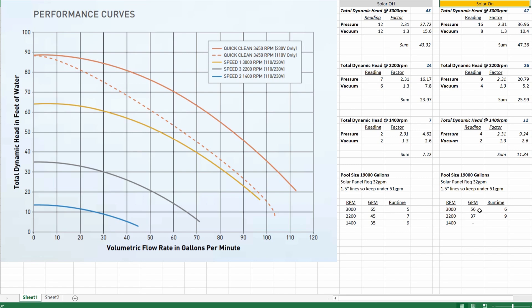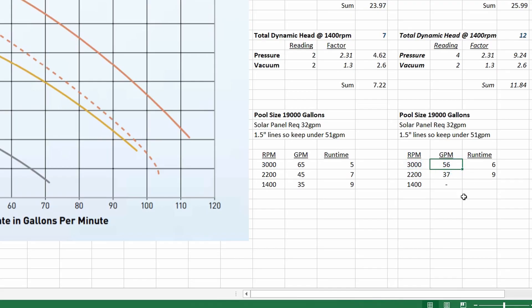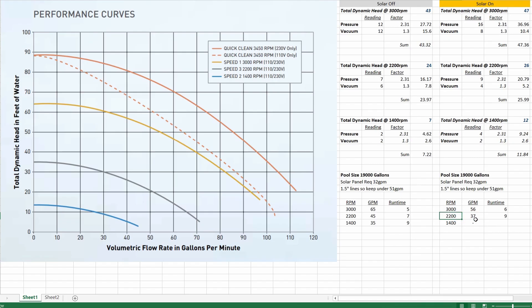So at 3000 RPMs with the solar on I actually lost about 10 gallons per minute but at 1400 RPM it couldn't get it up to the roof so 1400 RPM is too low for it to work with solar turned on but 3000 RPMs again is giving me still over 51 gallons per minute so that's still too fast on the RPM side of things so I'd want to slow down the pump which is fine because that actually uses less electricity which is good for me.